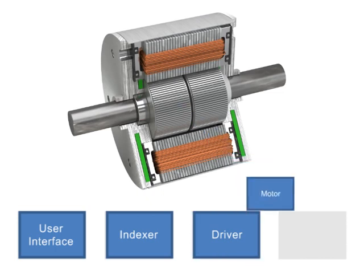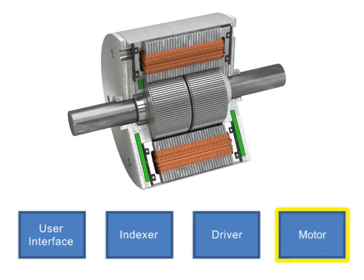The stepper motor is a brushless electric motor that converts pulses into mechanical shaft rotation. Each pulse moves the shaft through a fixed angle defined by the multiple-toothed electromagnets arranged around a gear-shaped rotor.